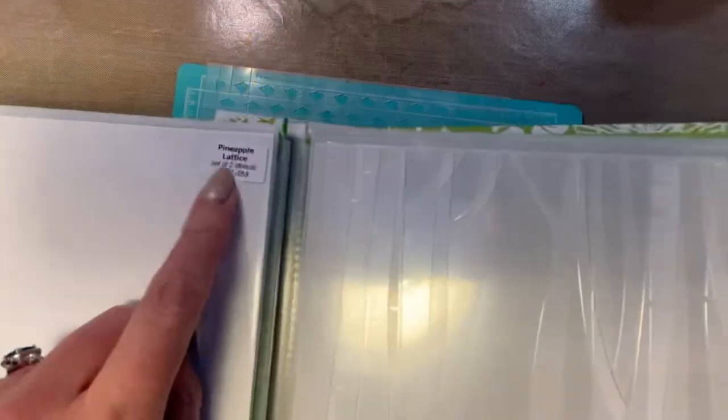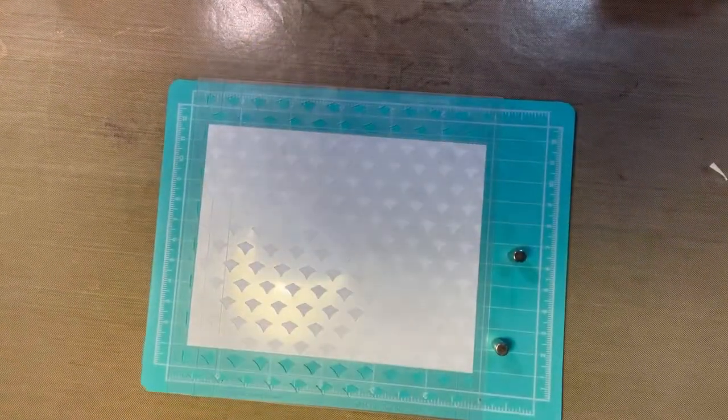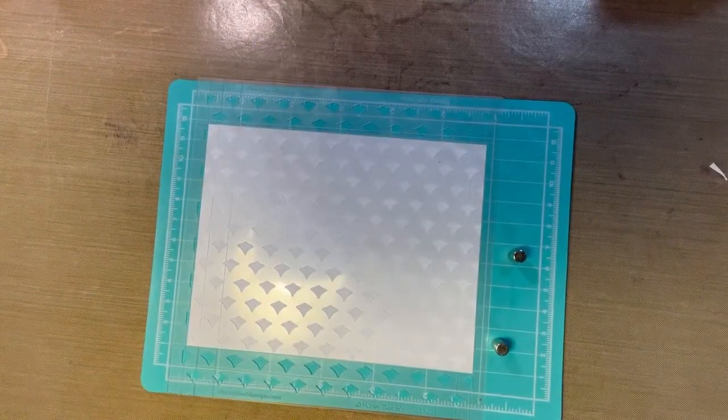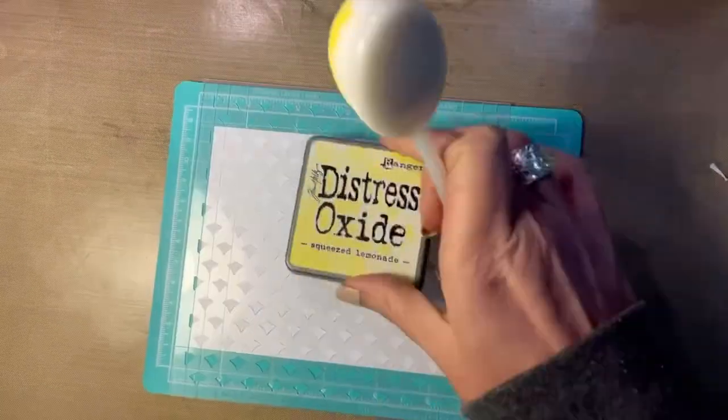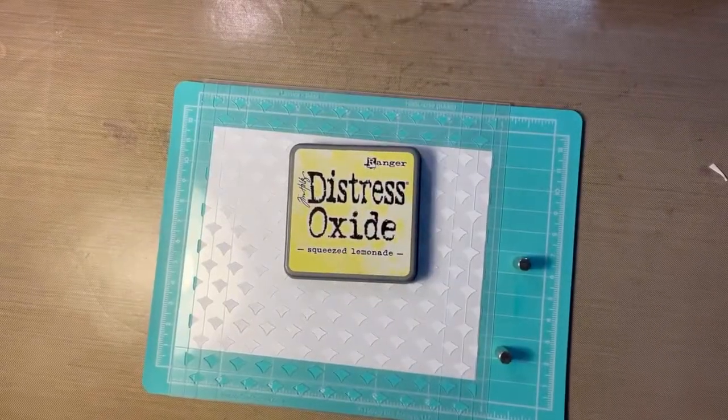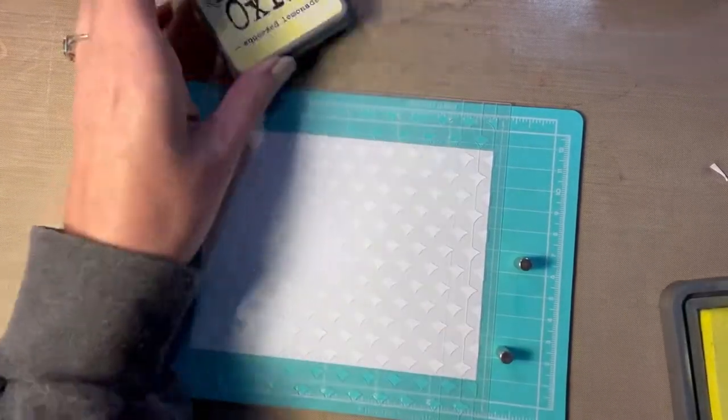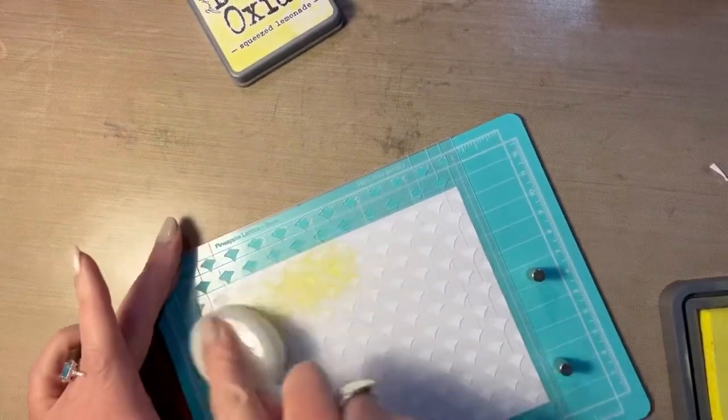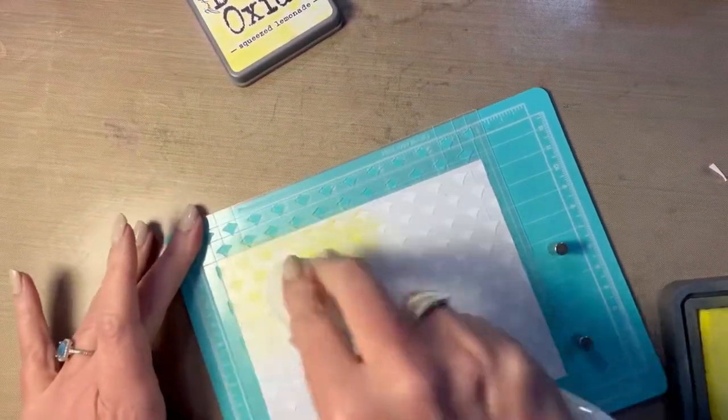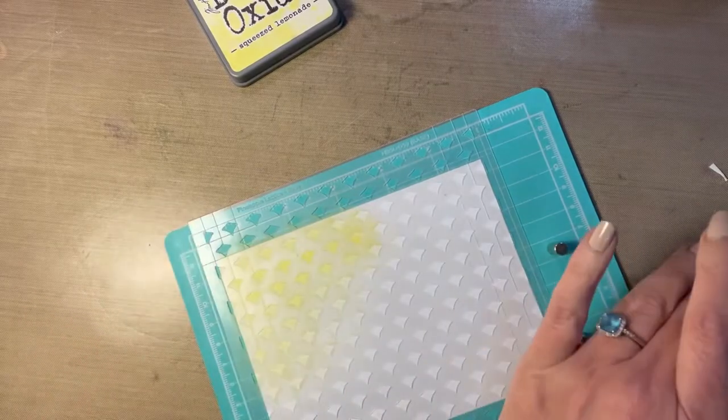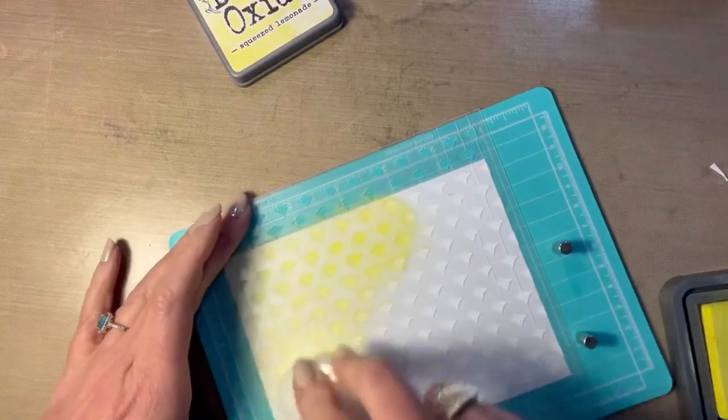So first we're going to start out with the Pineapple Lattice Layering Stencils. It's a set of two stencils. These are from Honey Bee and we're going to be using Distress Oxide. The first thing that I did was I used Pixie Spray on the back of my stencil and I'm using some squeezed lemonade Distress Oxide to do this layer.